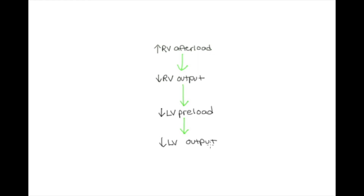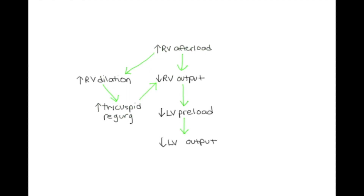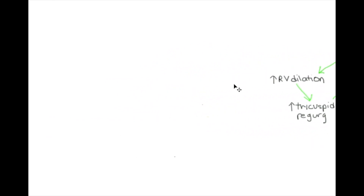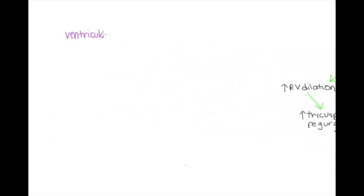Another consequence of increased RV afterload is that the RV starts to dilate — it's backing up with blood. As the RV dilates more and more, that creates a stretch on the tricuspid annulus, pulling it apart and further increasing tricuspid regurgitation, which worsens right ventricular output. Here I need to introduce one of the most important concepts: ventricular interdependence. While blood flow occurs in series from RV to pulmonary circulation to LV, the RV and LV cannot function in isolation. Something that happens to the RV, such as RV dilation, will also affect the LV and vice versa.